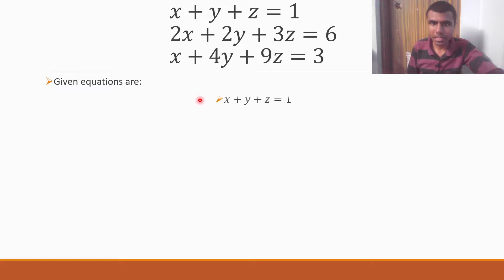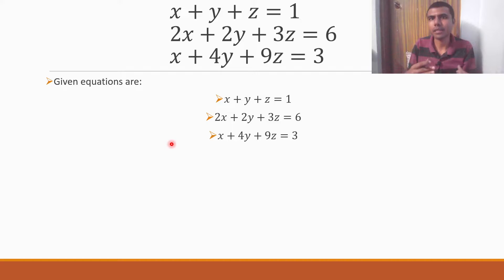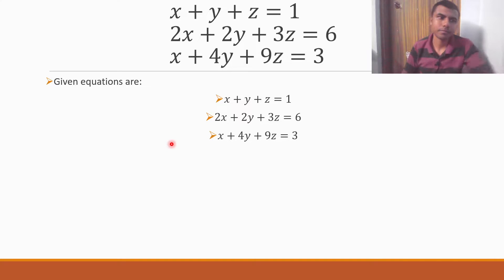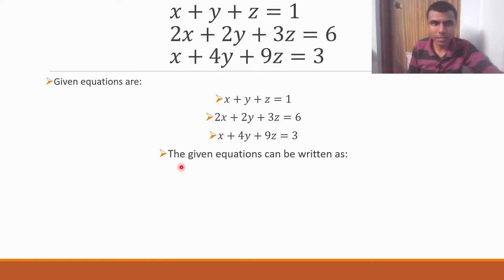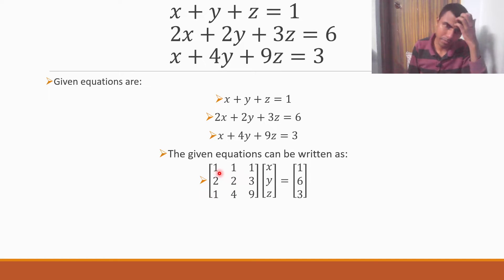Now the given equations are this. First we have to write this in matrix form. Now how are we going to write it? It's pretty simple. The given equations can be written like this. Now how did I get this? Listen carefully.